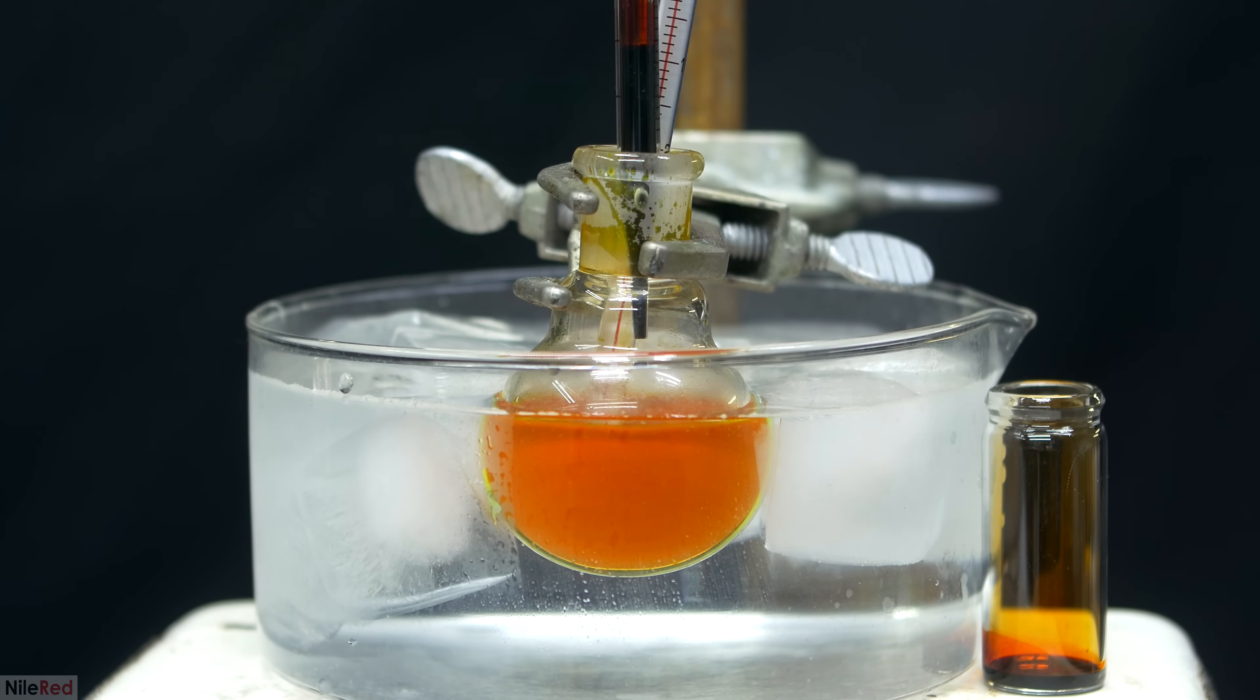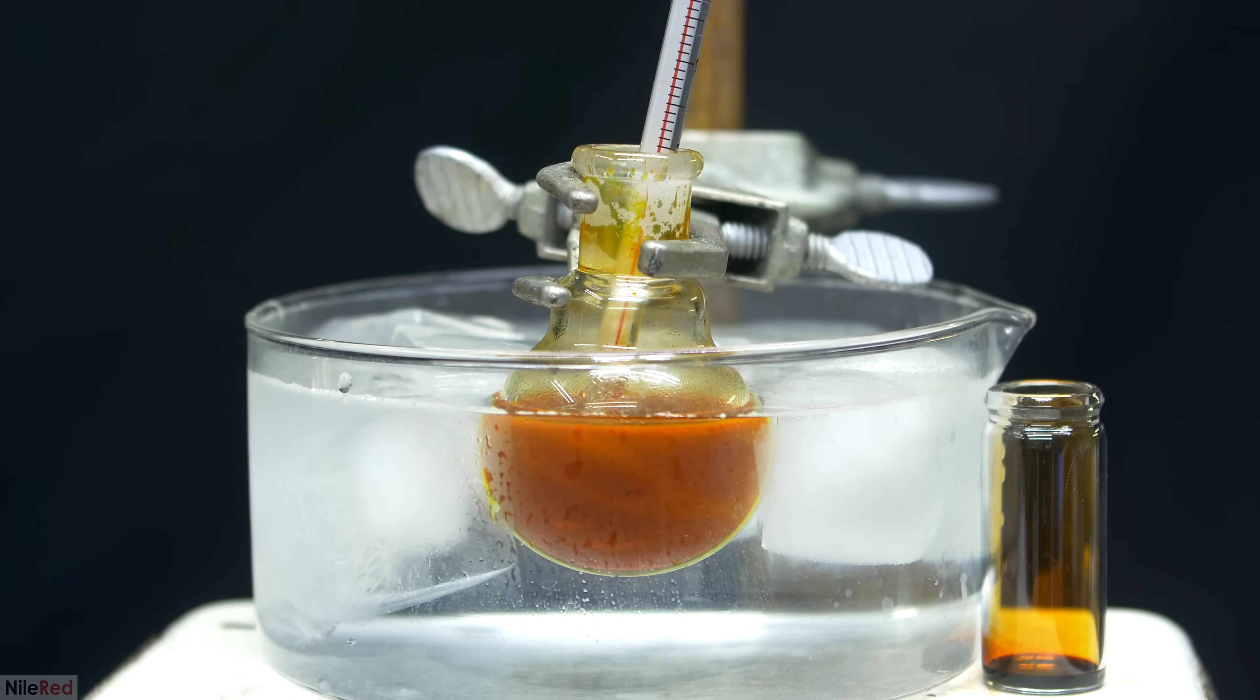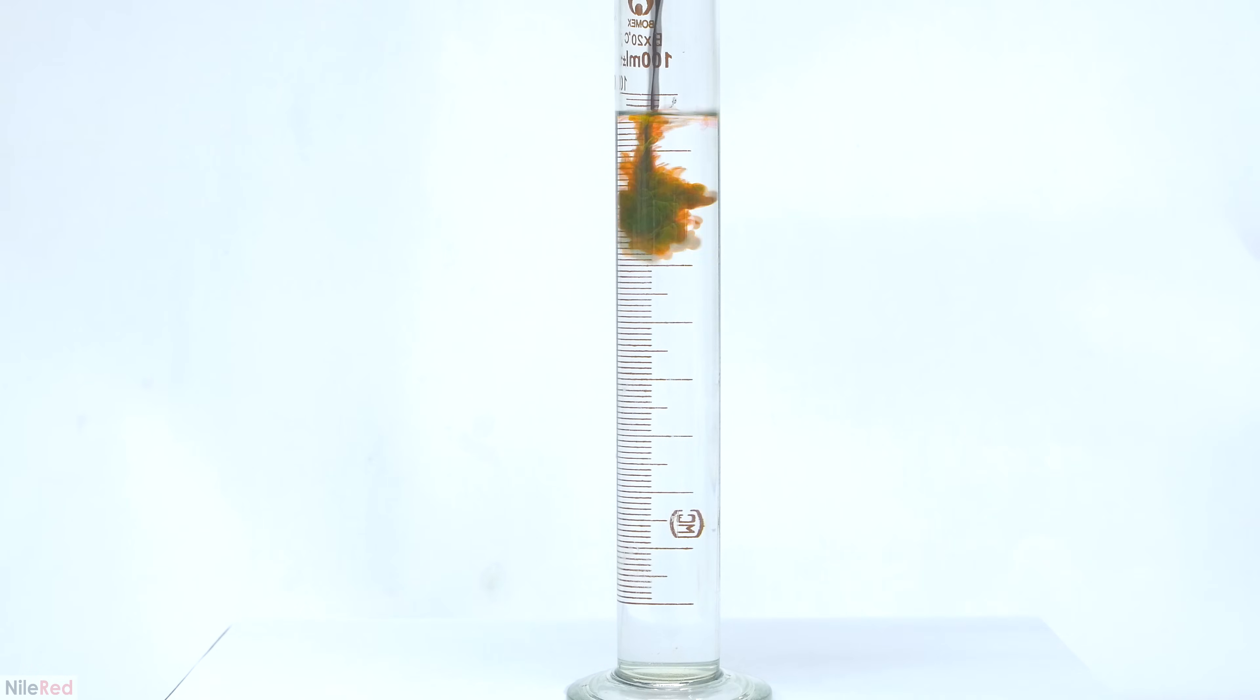Bromine isn't just a fun chemical to play with though and it actually has some useful chemical applications. Its most common use is to add a bromine group to a molecule and I've actually done this in a previous video. I use the bromine that I made in the clips that I just showed a second ago to make something called eosin.